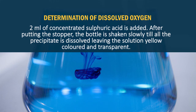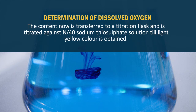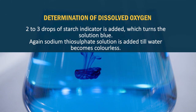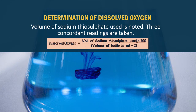After putting the stopper, the bottle is shaken slowly until all the precipitate is dissolved, leaving the solution yellow and transparent. The contents are transferred to a titration flask and titrated with N/40 sodium thiosulfate solution until a light yellow color is obtained. 2 to 3 drops of starch indicator are added, which turns the solution blue. Again, sodium thiosulfate solution is added until the water becomes colorless. The volume of sodium thiosulfate used is noted and three concordant readings are taken. Dissolved oxygen equals volume of sodium thiosulfate used multiplied by 200, divided by the volume of the bottle in milliliters minus 2.